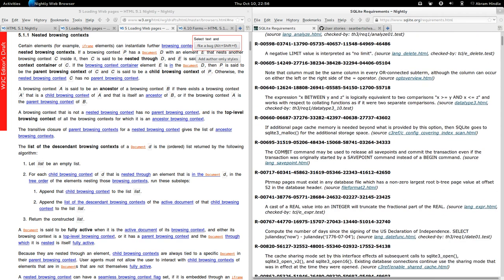So you can see that there's requirements. The commit command may be used to release all save points and commit the transaction even if the transaction was originally started by a save point command instead of a begin command. And they provide a source and they provide a requirements name. So if you fix a bug relevant to this kind of issue, you might want to reference this requirement.